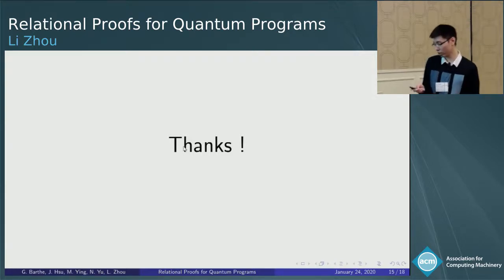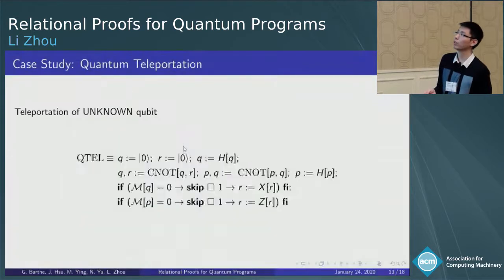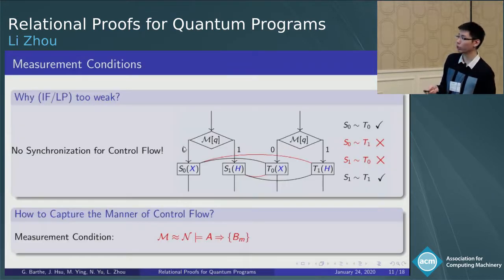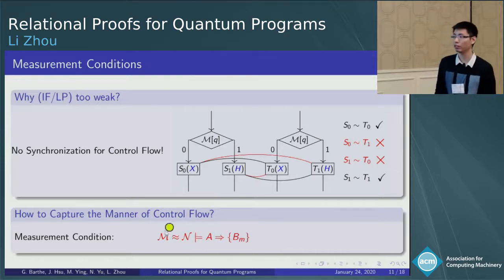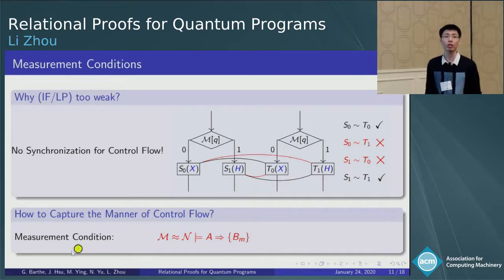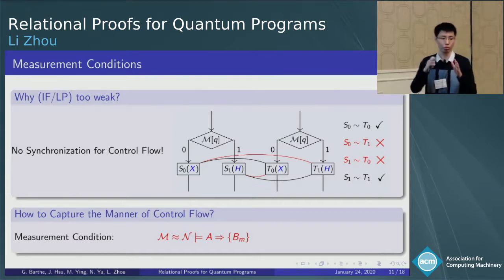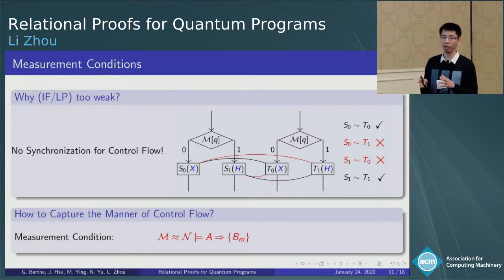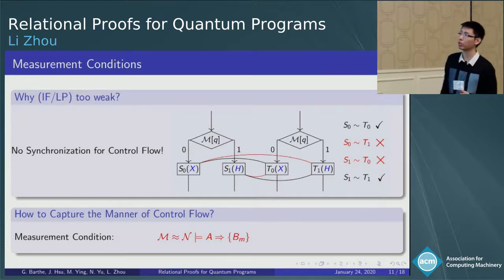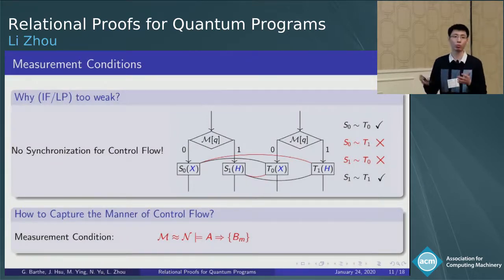Of course. For example, some programs that, as I mentioned, we use this measurement condition. This is indeed a very strong condition. We need that two programs have the same flow control. However, some programs may, the flow control may be similar, but not the same. And if the raw if is still too weak, then such programs we obviously cannot verify.